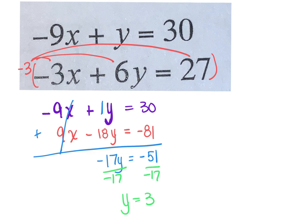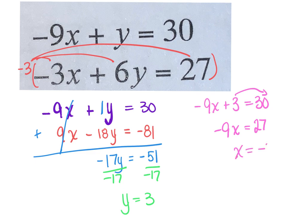Once I know y, plug it back in — same process. Negative 9x plus 3 equals 30. Subtract that 3 over. So I have negative 9x equals 27. Divide by negative 9. x equals negative 3. So my answer here is x, y: negative 3, positive 3.